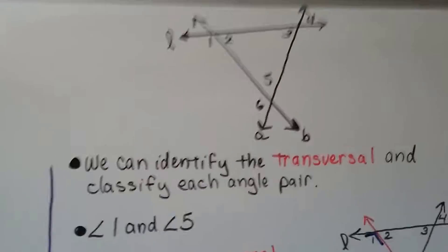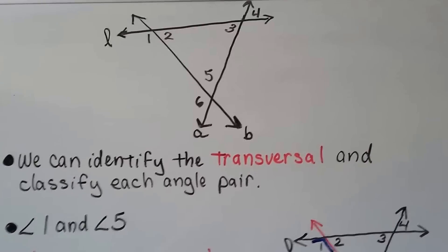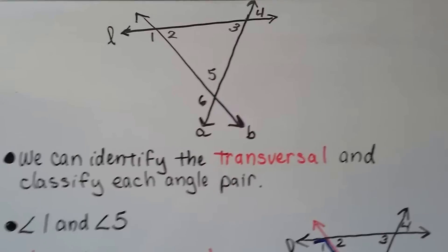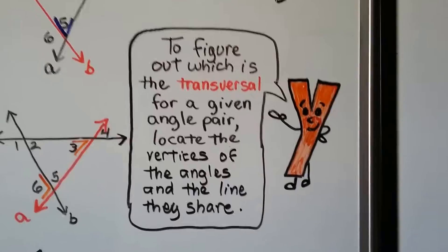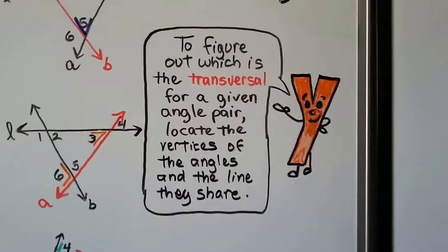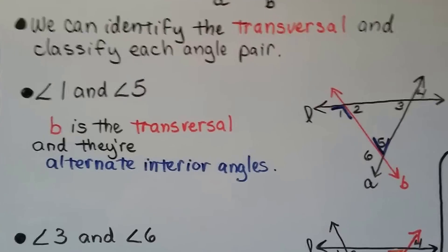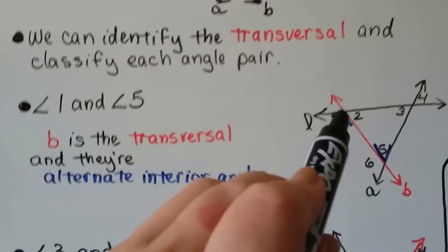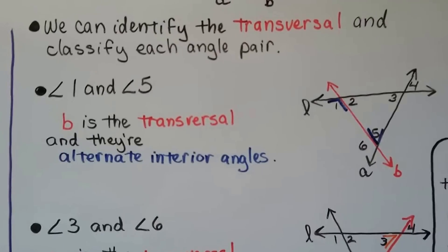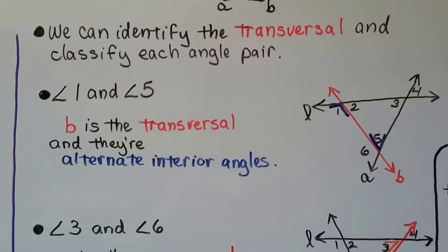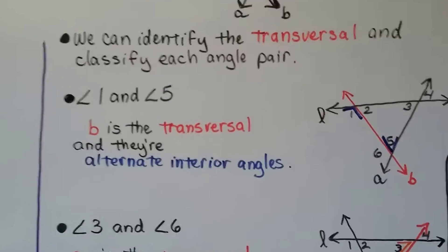Take a look at this diagram — there are lines and transversals, and the transversal can move around. We have line L, line A, and line B. To figure out which is the transversal for a given angle pair, locate the vertices of the angles and the line they share — that shared line is the transversal. For angles 1 and 5, their vertices share line B, so B is the transversal. They're on opposite sides of B and both inside the two black lines, so they're alternate interior angles.